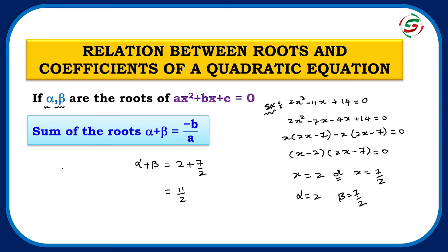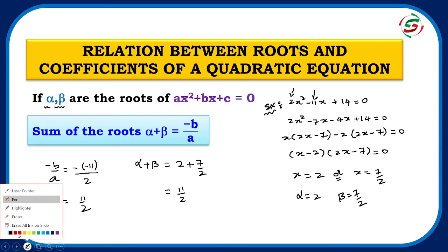Now check using minus b by a: the b value is -11, so minus(-11) divided by a = 2 gives 11/2. This also equals 11/2. So we confirm that if alpha and beta are the roots of ax² + bx + c = 0, the sum of roots alpha + beta equals minus b by a, where b and a are the coefficients.